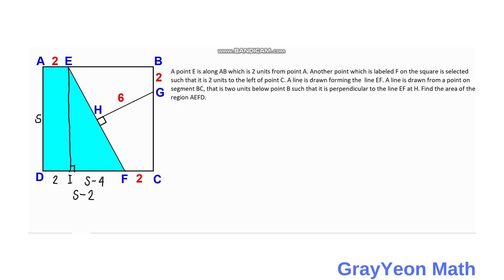We also notice that EH and HF have the same orientation with segment GH. So EH is equal to 6 units and HF is equal to 6 units. And we form a right triangle EFI. So we can use this right triangle to solve for the value of S using the Pythagorean theorem.